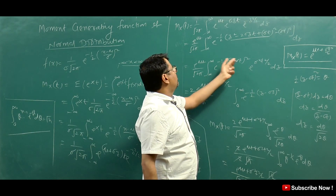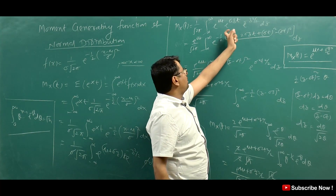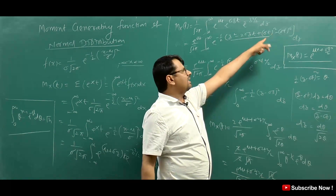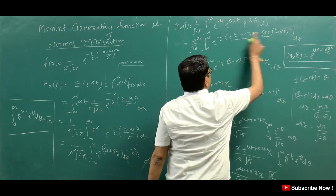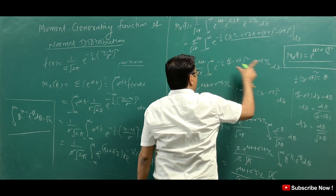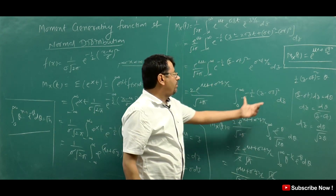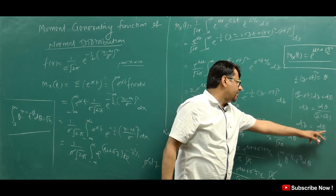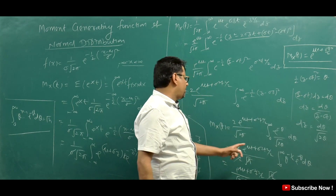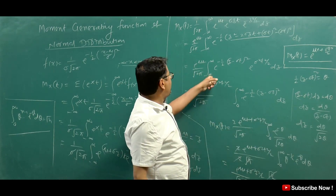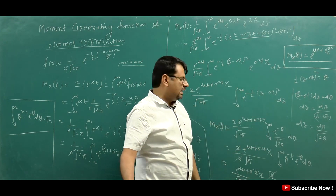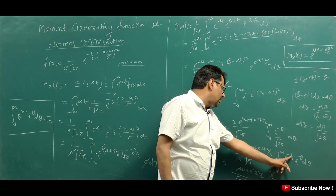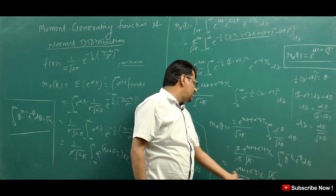To recap: we had z minus sigma t inside the square, giving z squared minus 2 sigma zt. Then we added and subtracted sigma t whole square to complete the square. The term minus 1 by 2 multiplies through, giving a plus for sigma squared t squared by 2. After considering the even function from minus infinity to infinity as twice 0 to infinity, and applying the Gamma substitution, root 2 cancels and gamma 1/2 equals root pi cancels, giving us the final MGF.